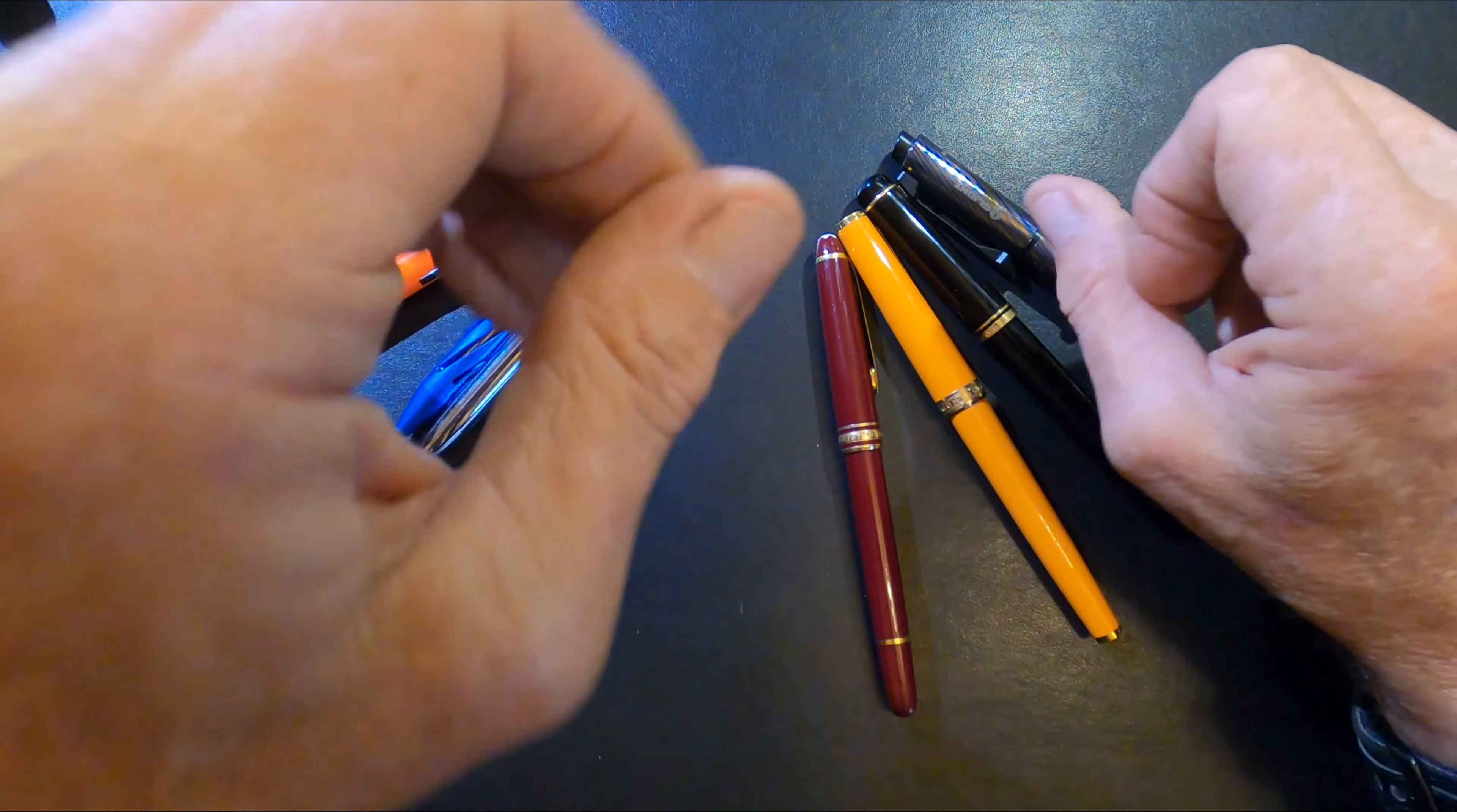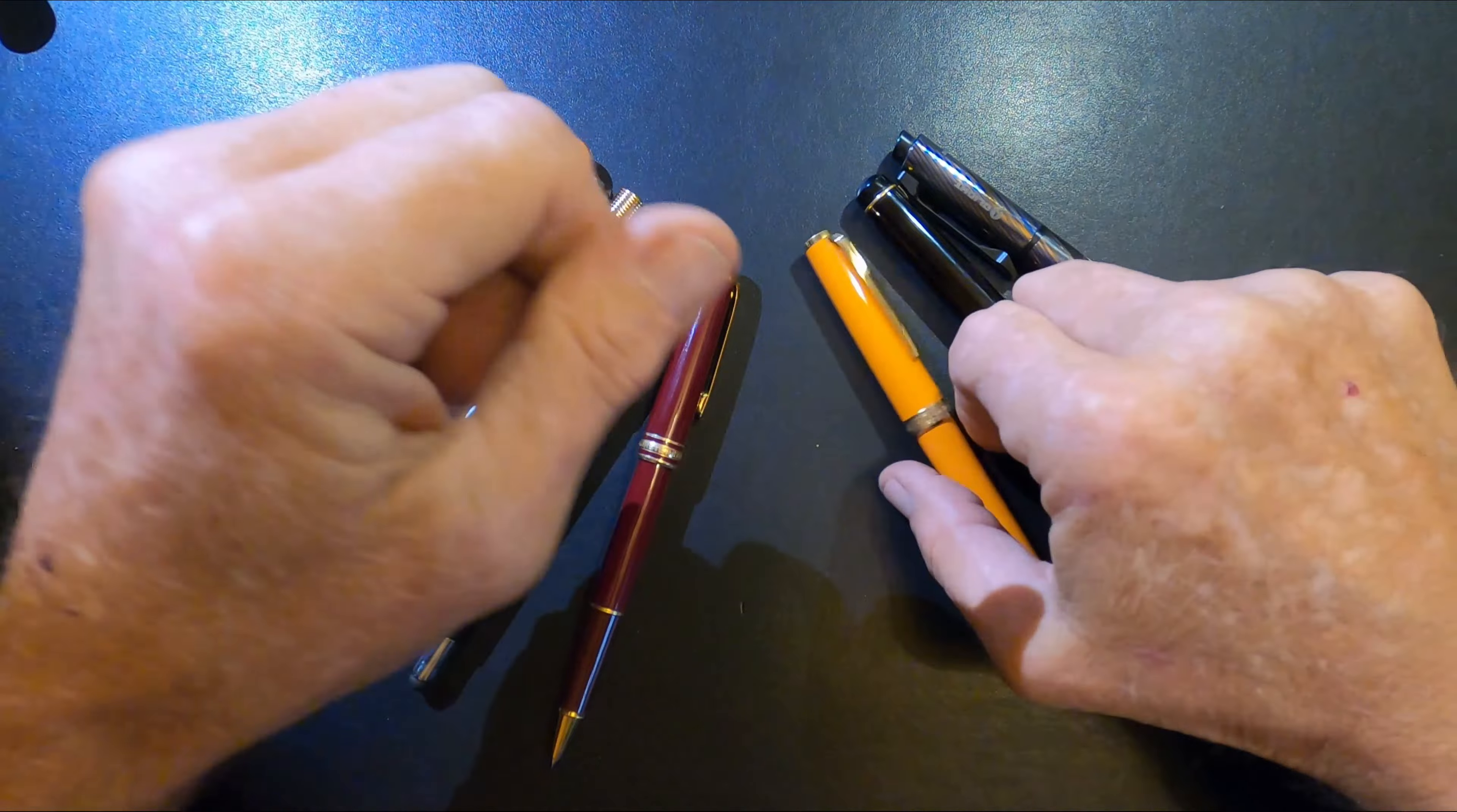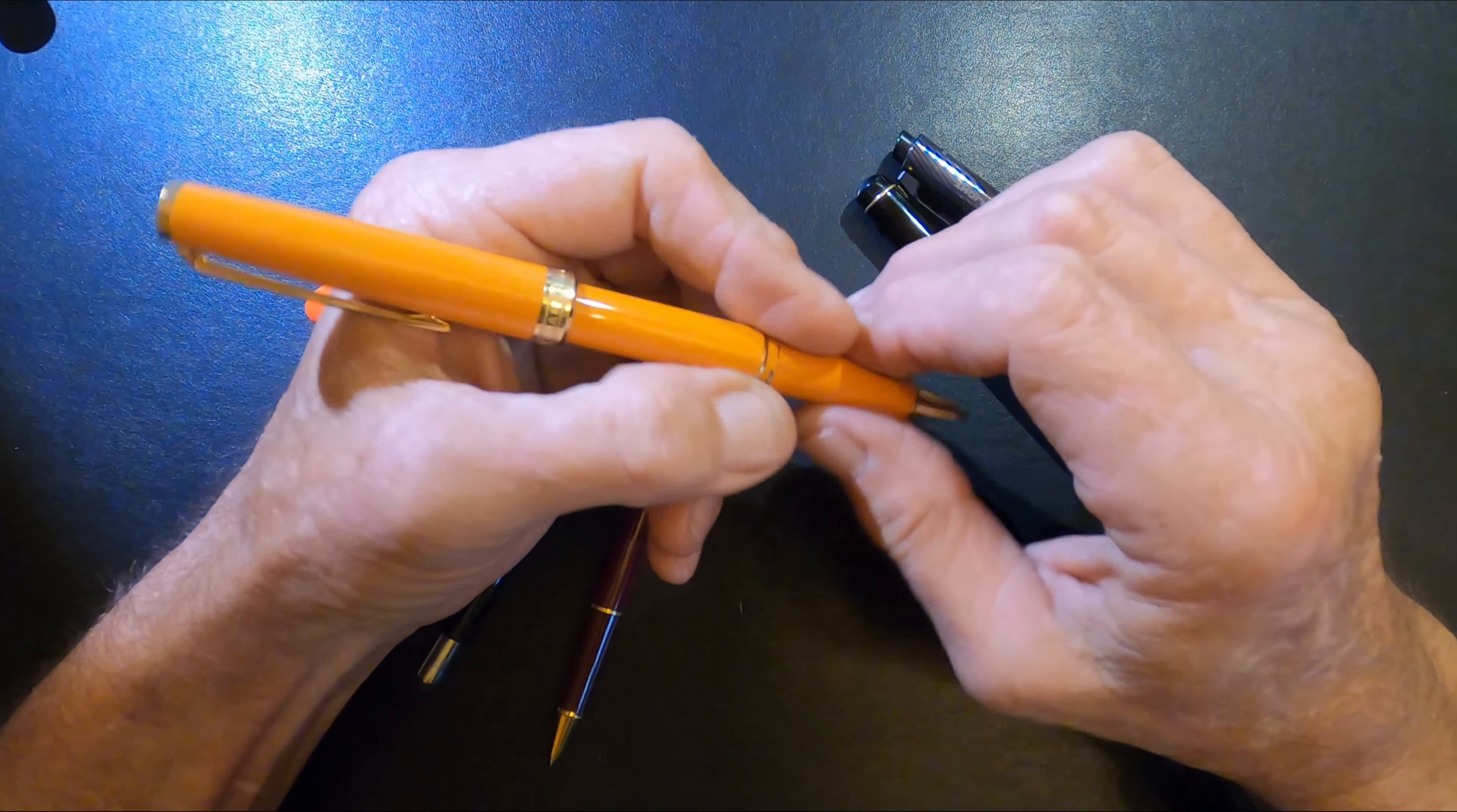Then we get over here into the pens that are a little higher on the pecking order. Mont Blancs—I love my Mont Blancs. They are spendy, but you're buying an investment is what you're doing. There's a rollerball there. This is a Mont Blanc Meisterstück in burgundy. And of course, I had to get an orange Mont Blanc, so this is the orange Mont Blanc Pix, P-I-X. Love, love, love, love this pen.